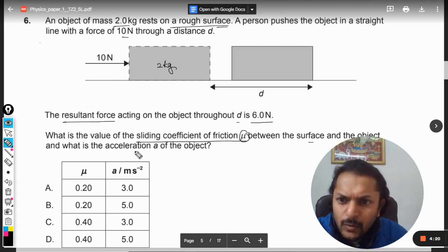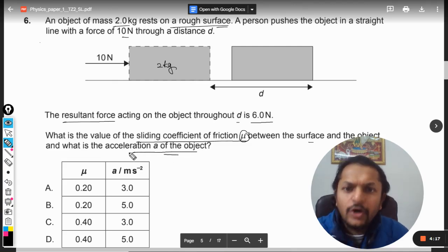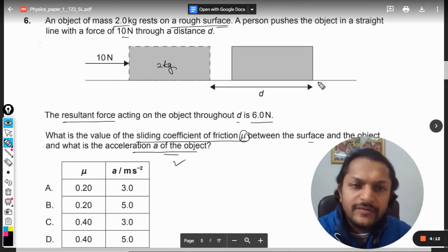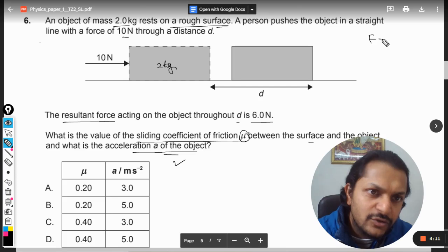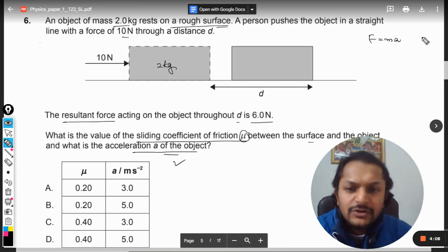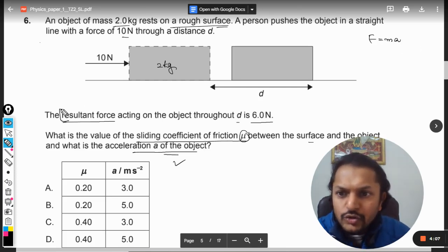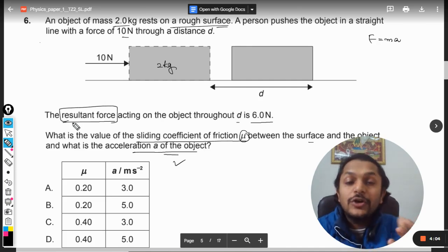Now as far as the acceleration is concerned, we are very clear about it that there is only one formula, that is F = ma. The resultant force is given to us, so there is no question of how to find it.